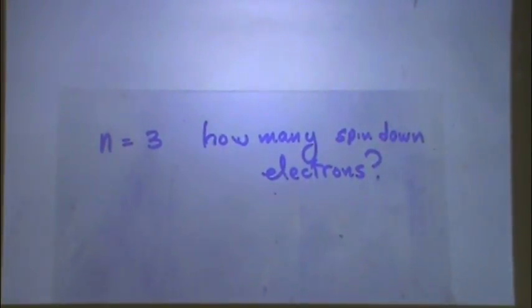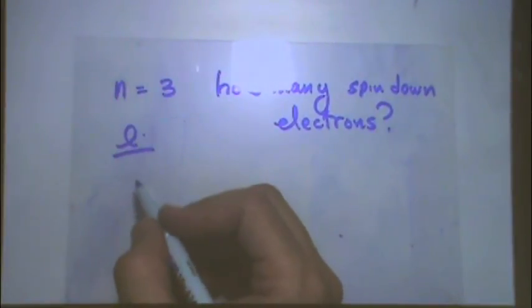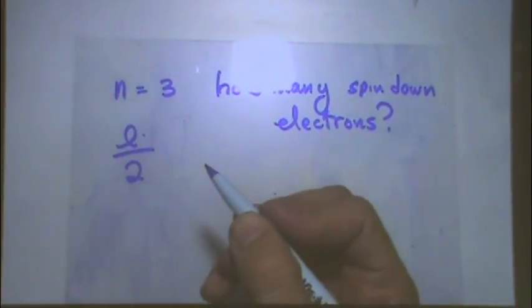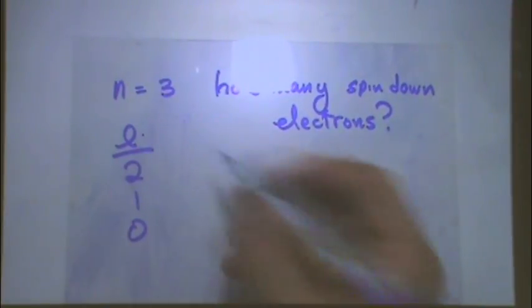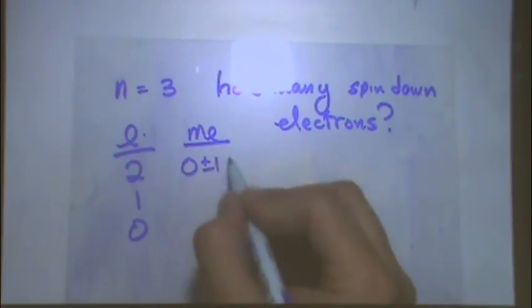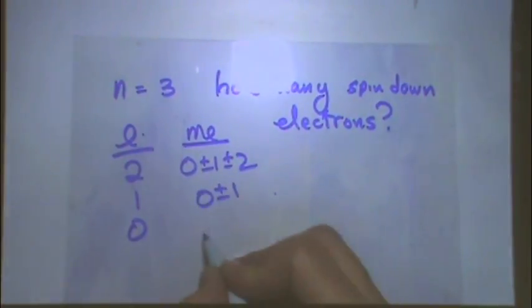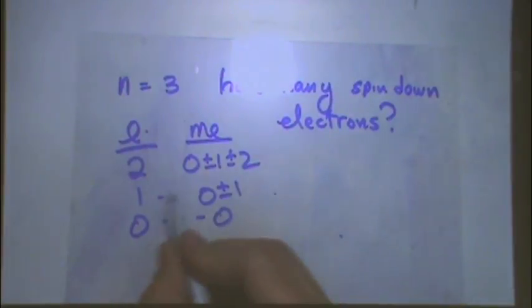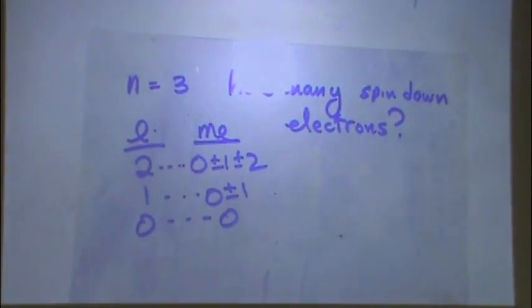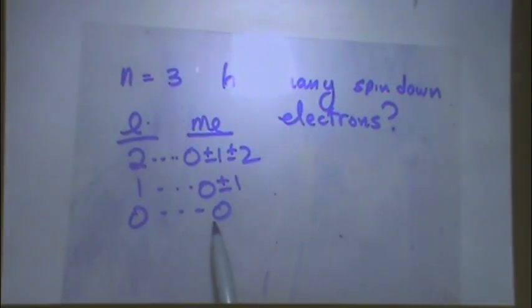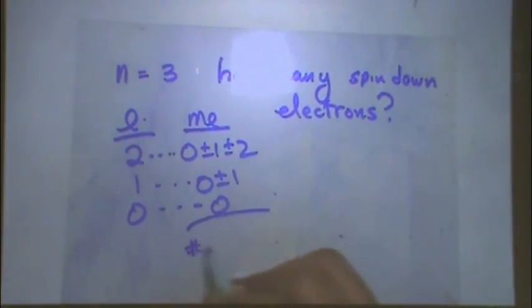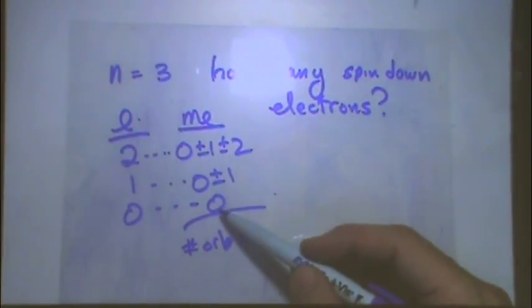So this is a common question. How many electrons? What you'd want to do is write out all the L values for N equals 3. So what's the largest? 2. What's the smallest? 0. So 2, 1 and 0. Then write all the M sub L values. 0 plus minus 1 plus minus 2. 0 plus minus 1. And then 0 for 0.